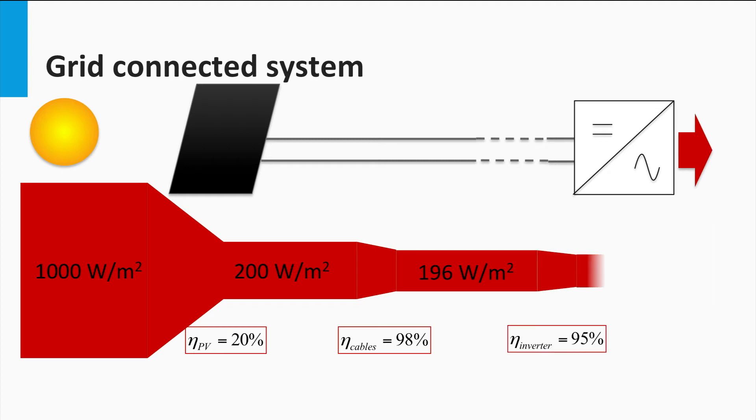Thus the AC power per area present in the system is 95% of 196, which is 186.2 watts per square meter.